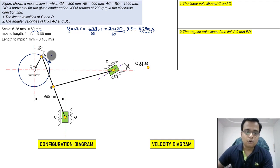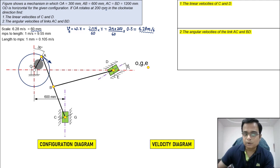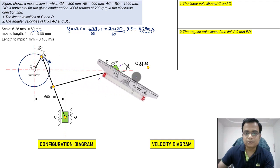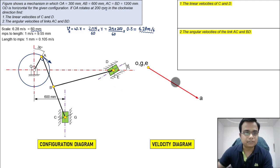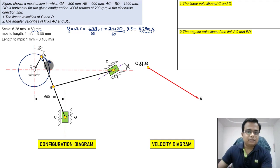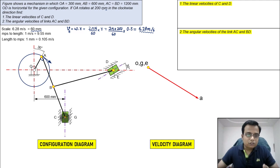Mark a point corresponding to all fixed links O, G, and E. Link OA is at 30 degrees with the vertical, so keep the roller scale perpendicular to this link, roll it to the required distance, and draw a line — that gives you point A, representing the velocity of A.